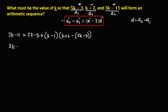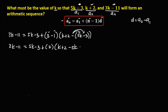Simplifying, we have 3k minus 11 equals 5k minus 3, then plus 3 minus 1, which is 2, times k plus 2 minus 5k minus 3. Distributing the negative gives negative 5k and positive 3.